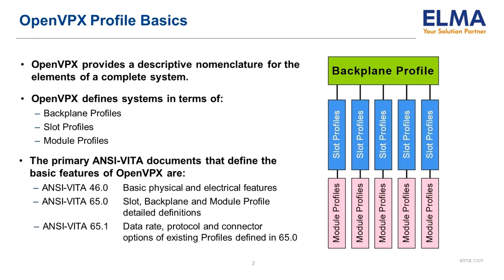To simplify the addition of new module and backplane dash numbers to existing backplane and module profiles, VITA 65 was broken into two documents in 2017. The primary document, VITA 65.0, has all the basic definitions of existing backplane slots and module profiles. VITA 65.1 was developed to define all backplane slot and module dash numbers as well as descriptions of specific VITA 66 and 67 modules.